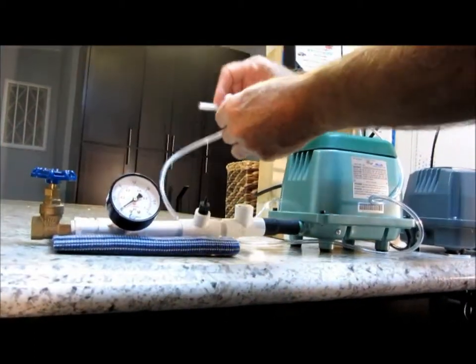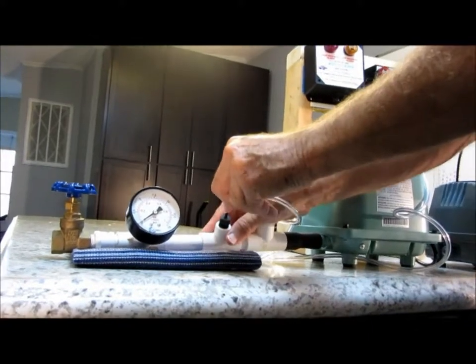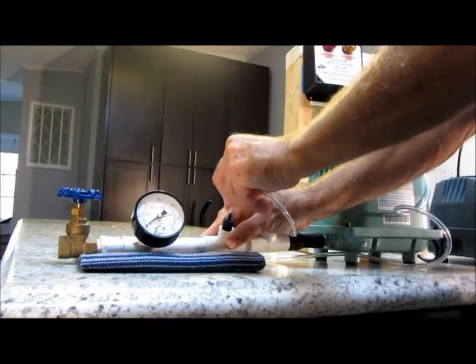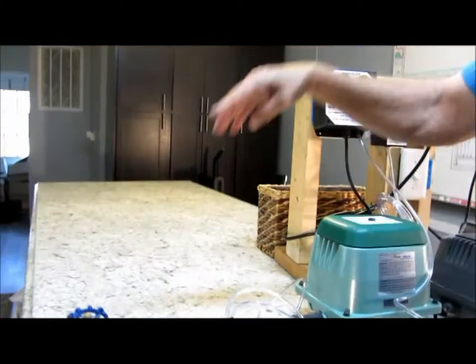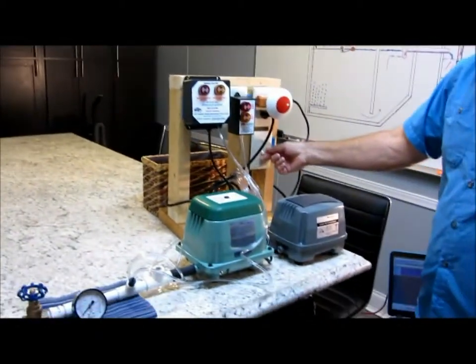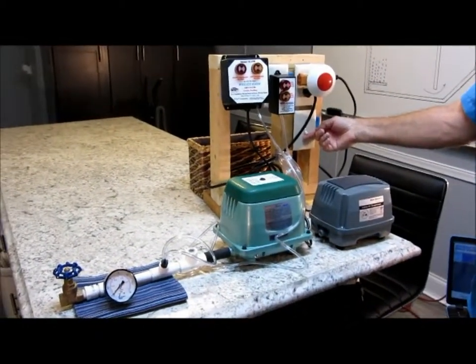For the wireless siren, all you have to do is plug it in. There is no programming required. You will see that when you plug it in, it will blink the siren once to signify that it is armed and in standby.